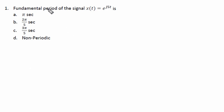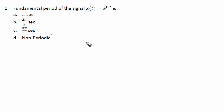The fundamental period of the signal x(t) = e^(j5t) is: option A, π seconds; option B, 2π/5 seconds; option C, 3π/5 seconds; and option D, it is a non-periodic signal. We shall figure out which is the right option for this question.